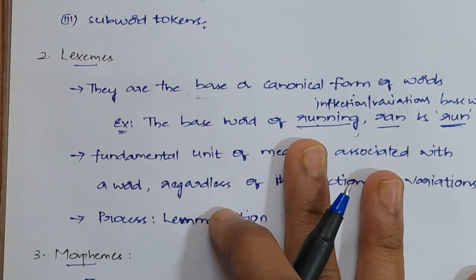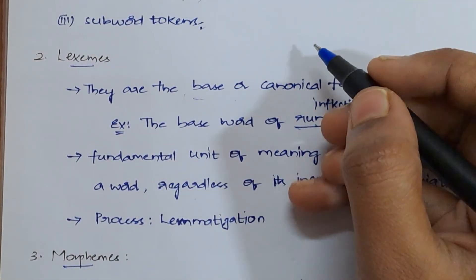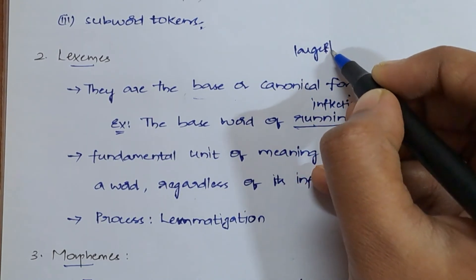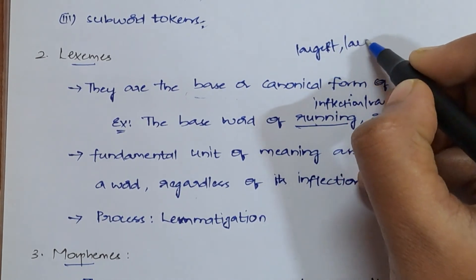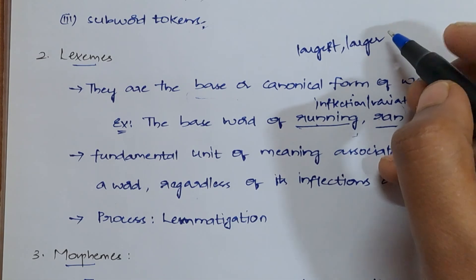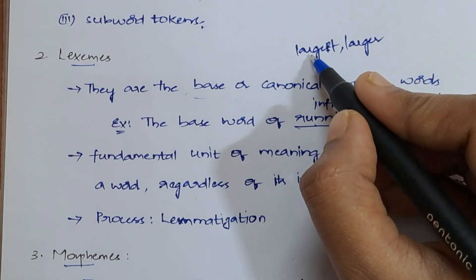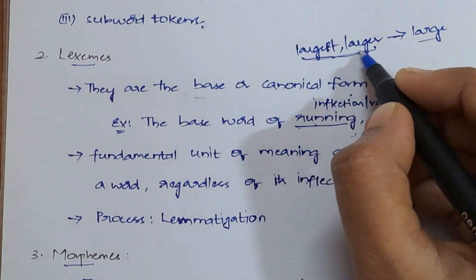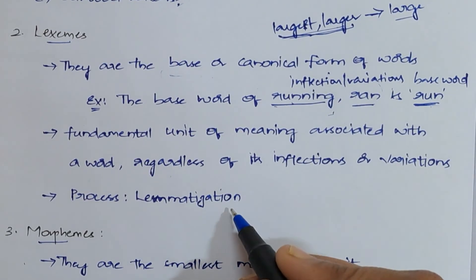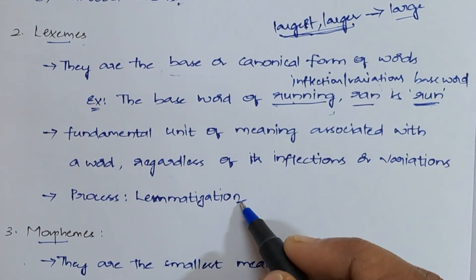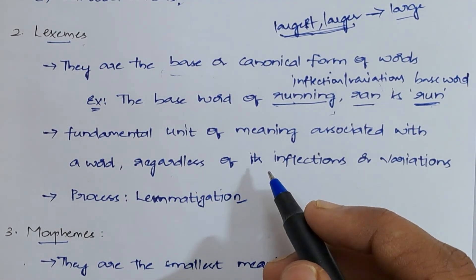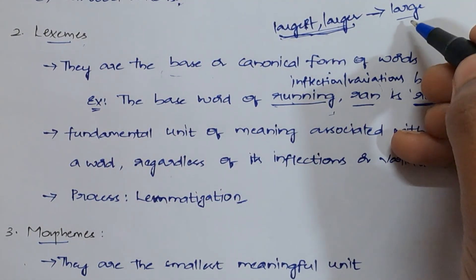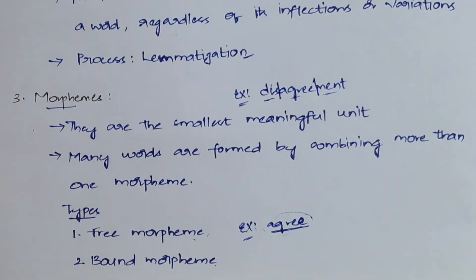To understand more clearly, take the example of 'largest' and 'larger' — both are inflections, and the base word is 'large'. We use a process called lemmatization to obtain lexemes. Lemmatization considers all the inflections and gives us the base word as the result. This result is nothing but the lexeme.